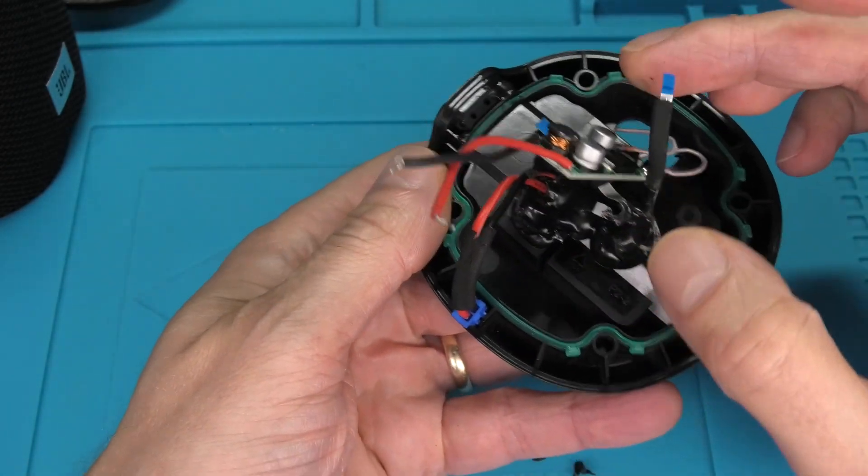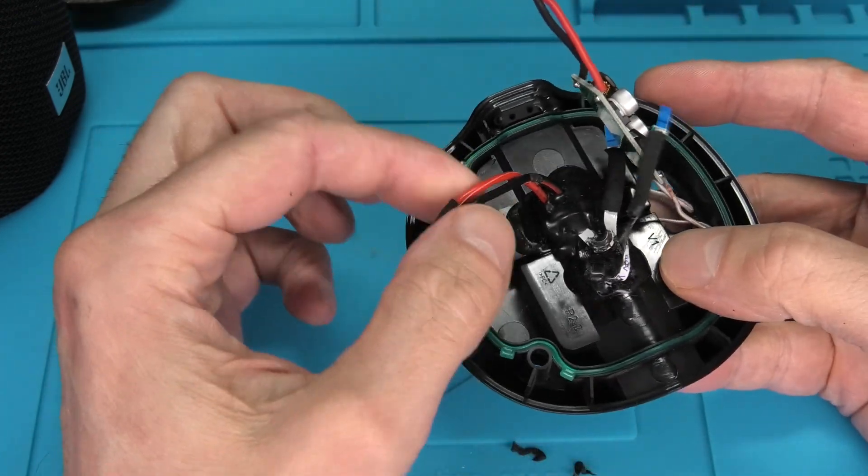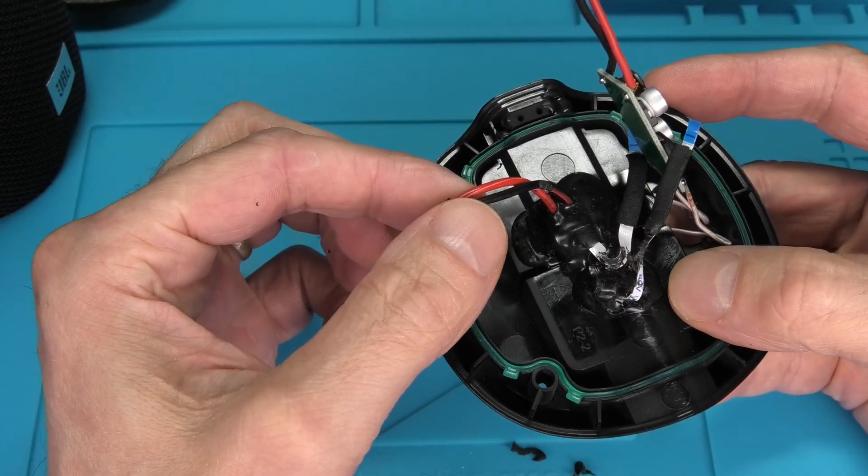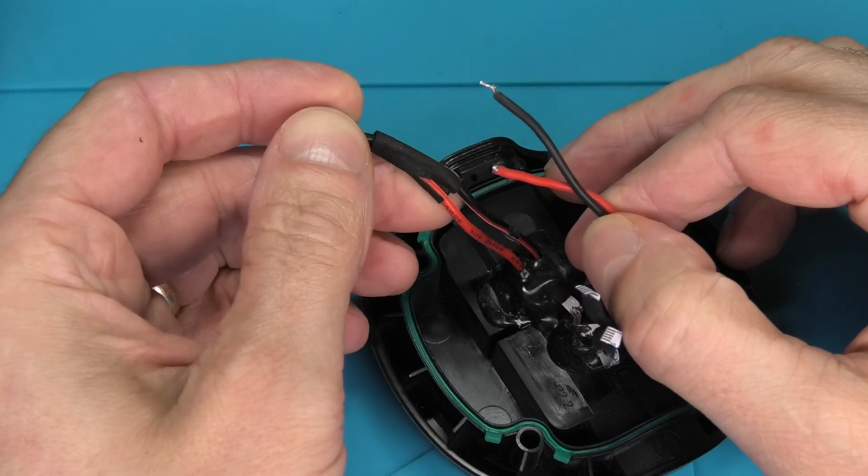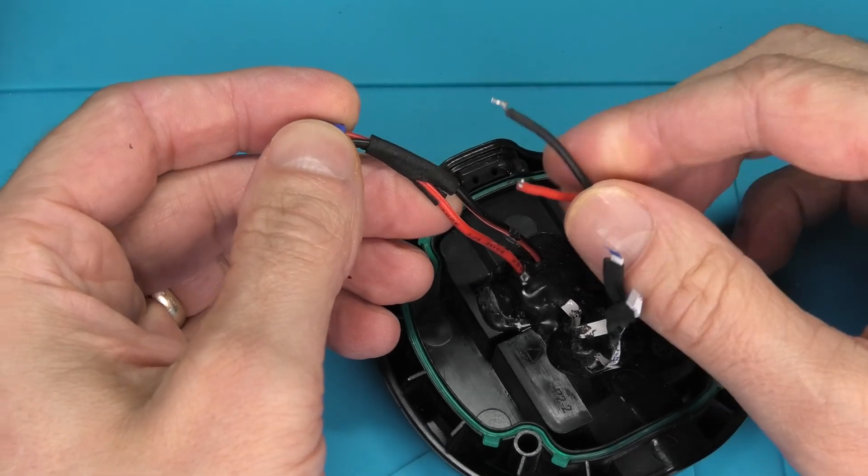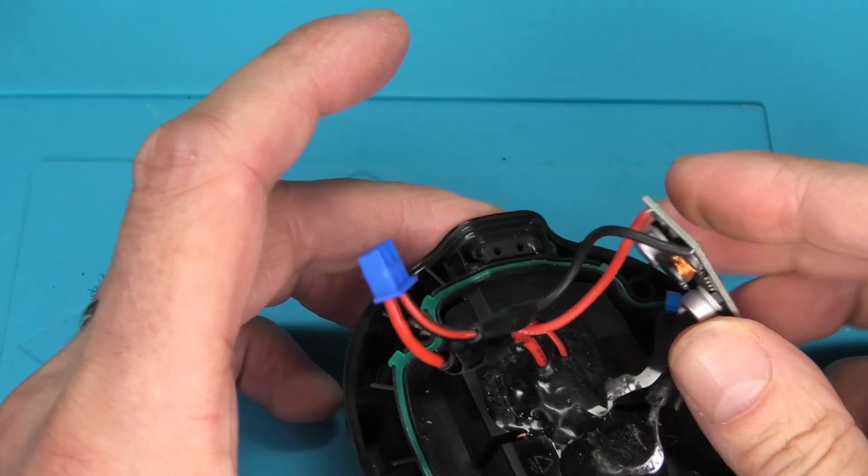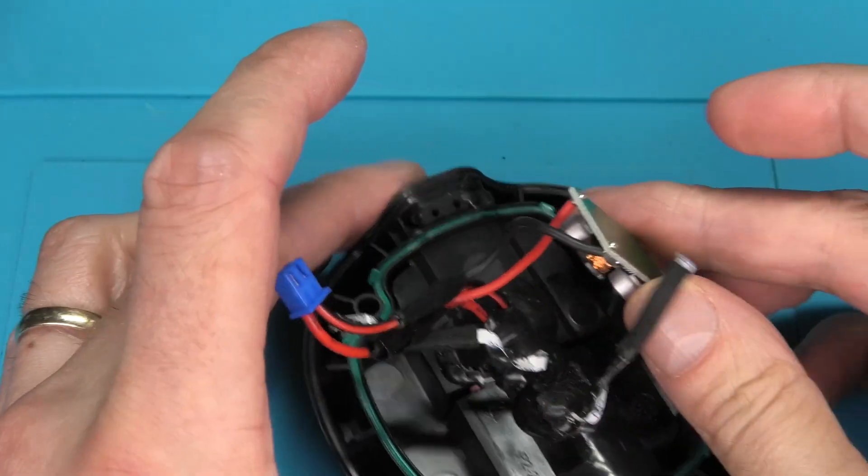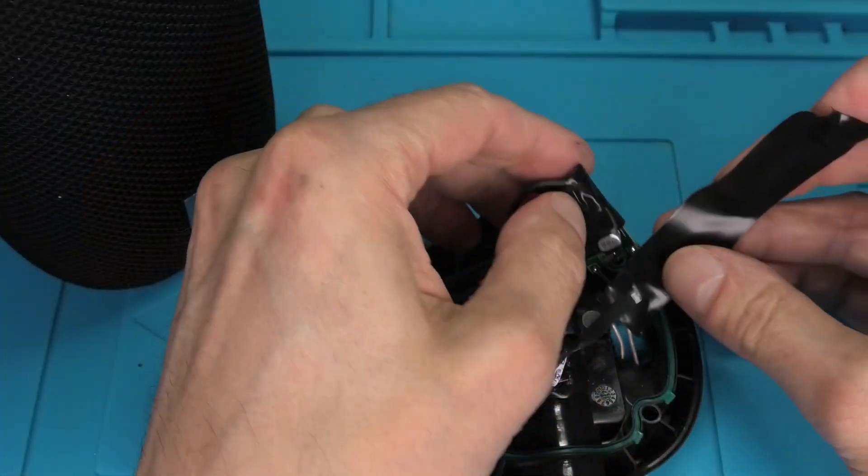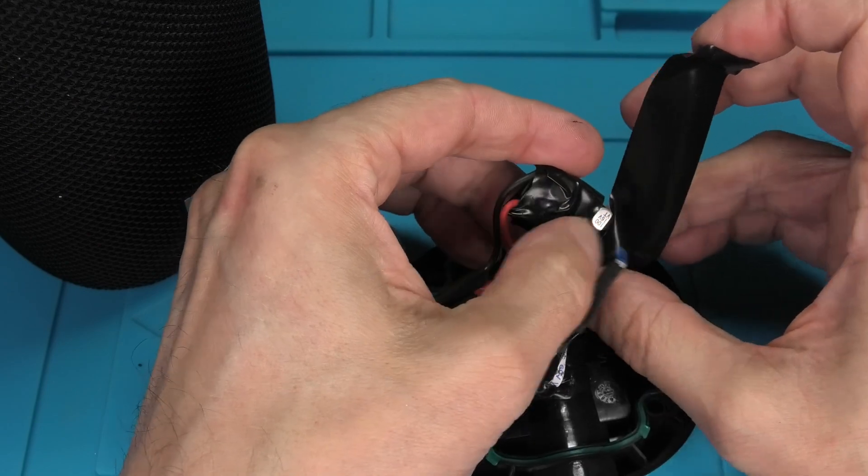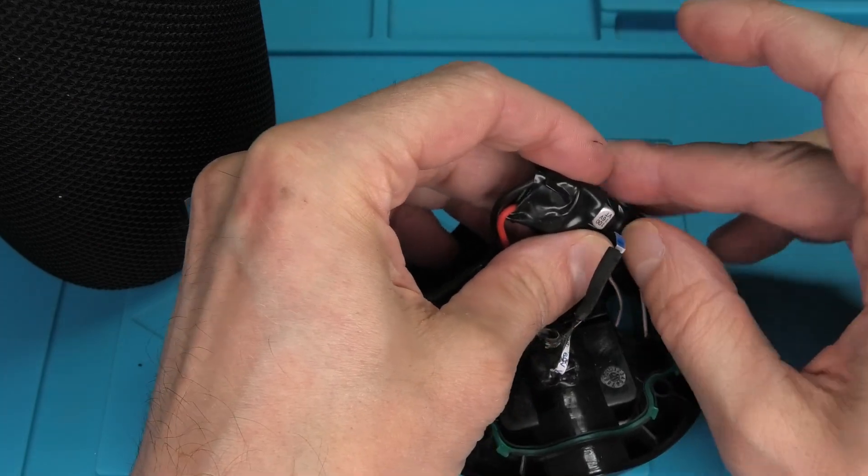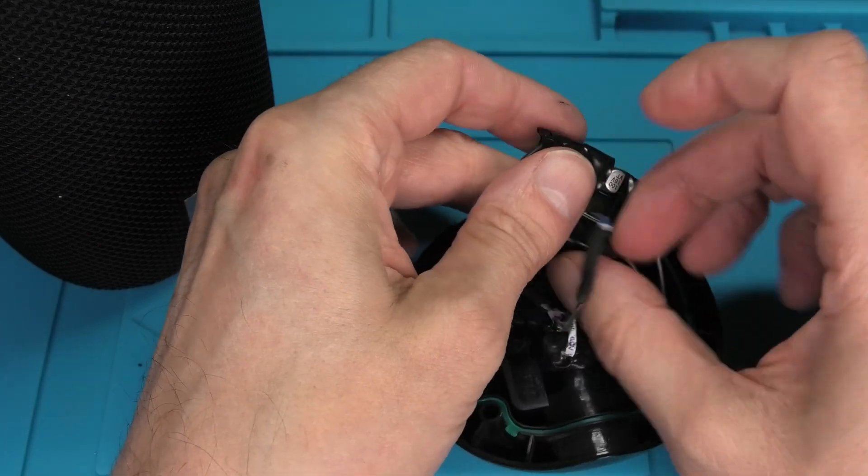And then on the inside we find the original black wire for the power supply. So this comes from the micro USB port and all we have to do is splice these wires together. And since the small PCB is still going to float around inside of the speaker kind of uncontrolled, I am going to wrap this in some electrical tape to prevent it from contacting any other components.